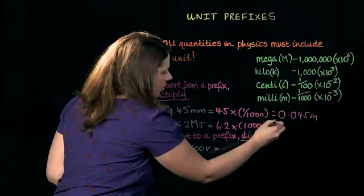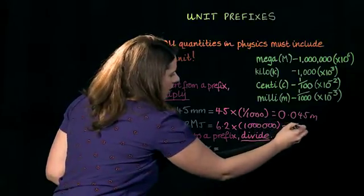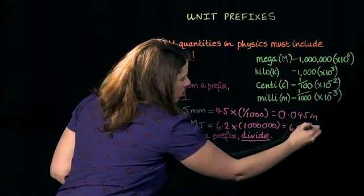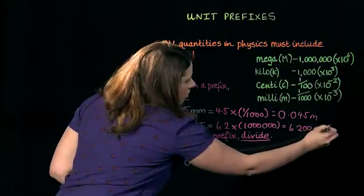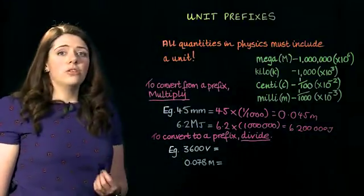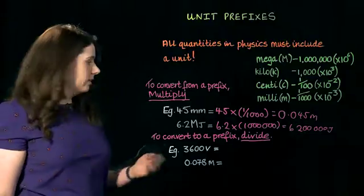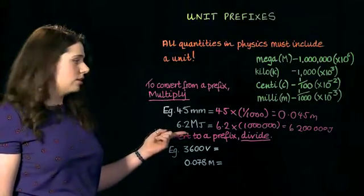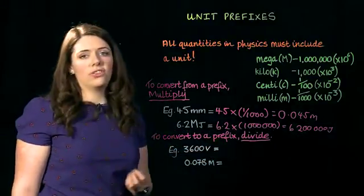So one and six zeros, and that will come out as 6,200,000 joules. And this also helps us to see why we use these units. It's much easier to say 6.2 megajoules than 6,200,000 joules.